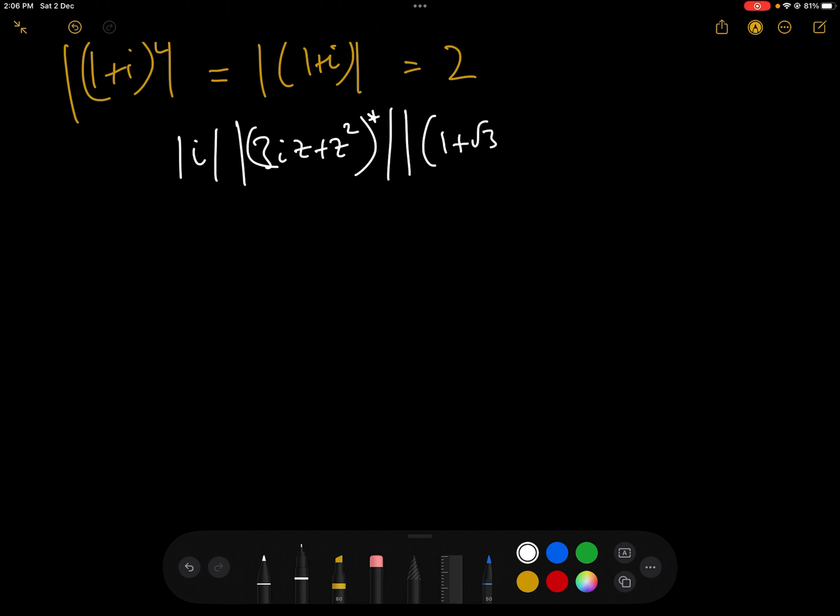Mod i, mod 3i z add z squared conjugate. Mod 1 add root 3 cubed. Mod z, all over mod z, mod 4z conjugate minus 12i, mod 1 add i squared.